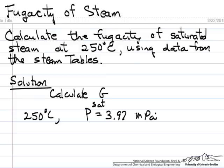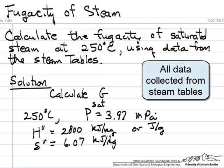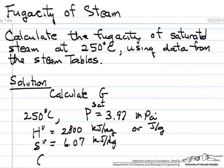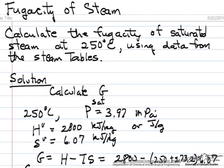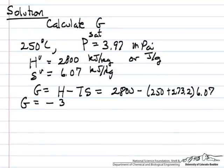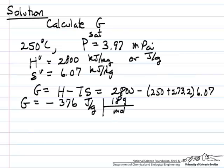We look up the values for enthalpy and entropy from the steam tables for the vapor phase. Using the definition for Gibbs free energy, H minus TS, that is 2800 minus the temperature (250 plus 273.2 to make it absolute temperature) times 6.07. This gives us a Gibbs free energy of minus 376 joules per gram. Converting to moles using 18 grams per mole, the Gibbs free energy is in joules per mole.